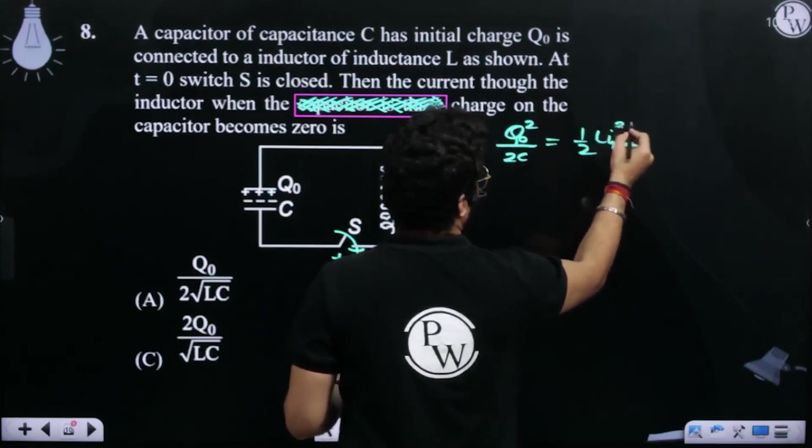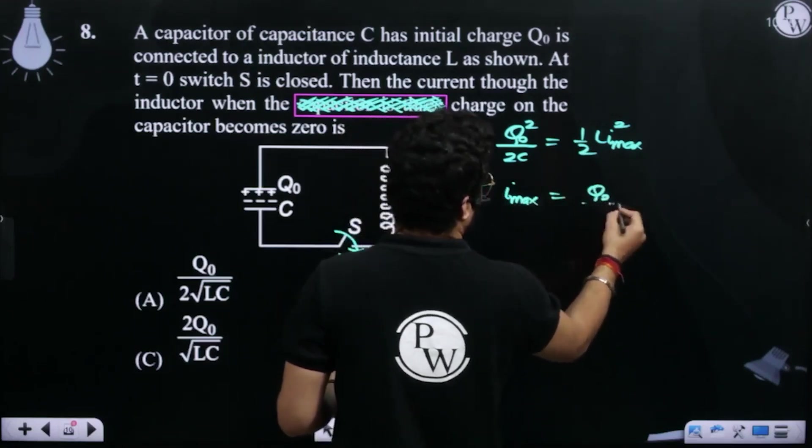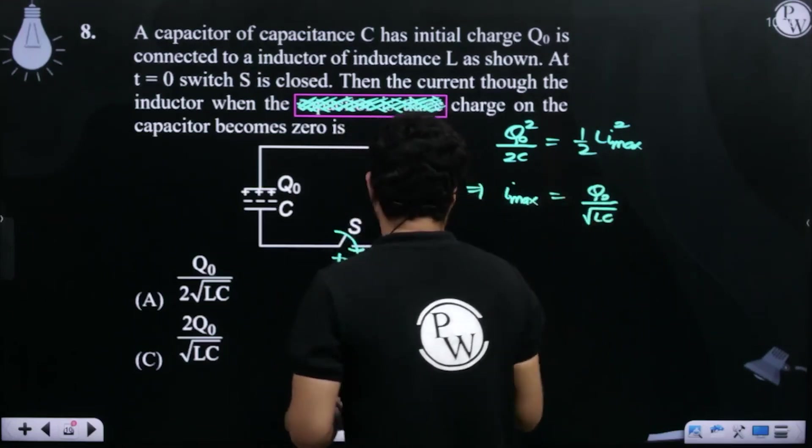I max square. I max, I max not by under root LC.